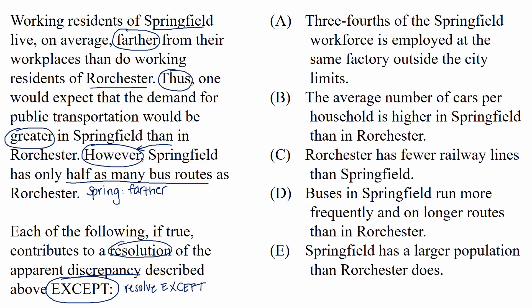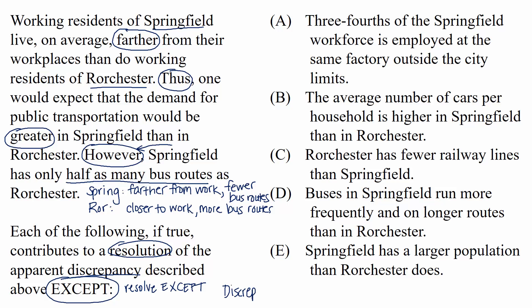We would expect that the demand for public transportation would be greater in Springfield than in Rochester. But we also learned that in reality, Springfield, which has the workers who are farther from their workplaces, actually has only half as many bus routes as Rochester. It can be immensely helpful to do a quick sketch so the relationships are easier to see: Springfield has the farther workers and fewer bus routes; Rochester has the closer workers and more bus routes. So let's phrase this discrepancy as a question: why are there half as many bus routes in Springfield when the Springfield workers live farther from work than the Rochester workers?